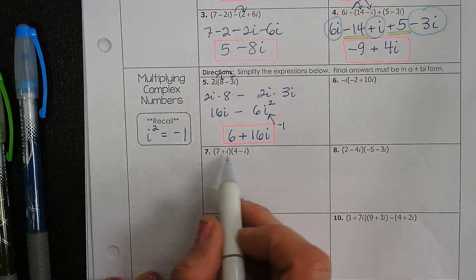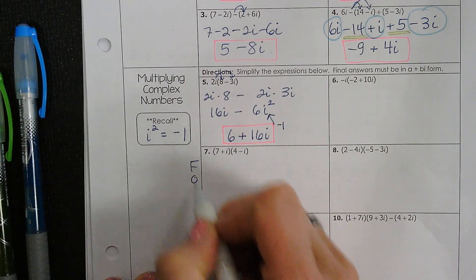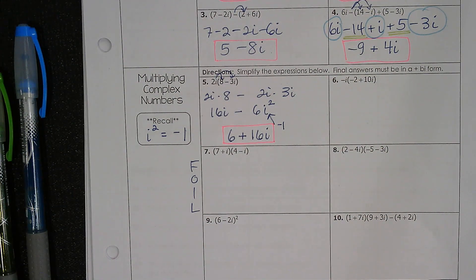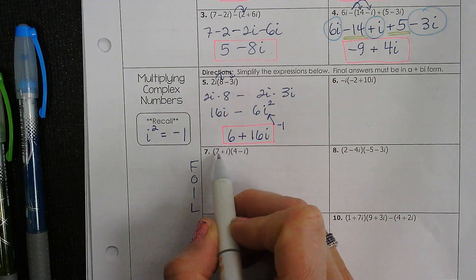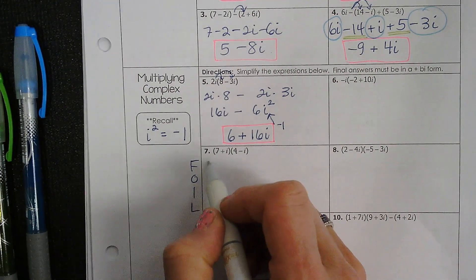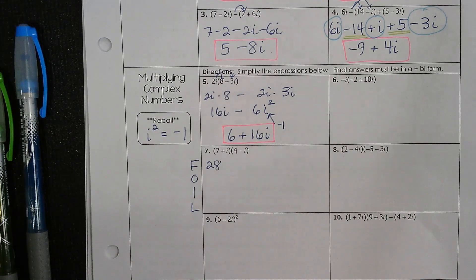So whenever we did binomials before, we always used the FOIL method. All right? So the first two are the same as a regular binomial, 7 times 4. The first two are 7 times 4.